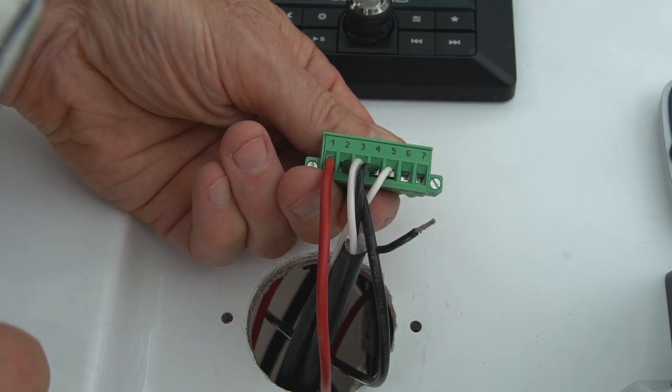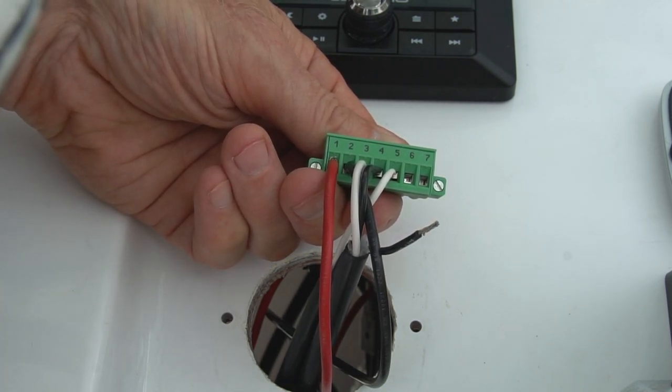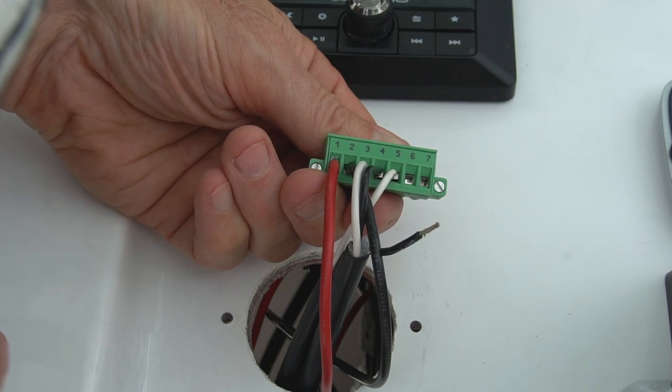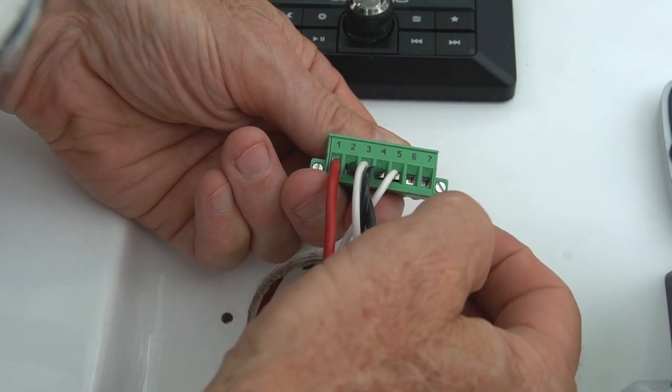Now we've cut off all of the push-on connectors and stripped each wire, leaving about one-quarter to three-eighths of an inch of wire exposed on the end of each wire.